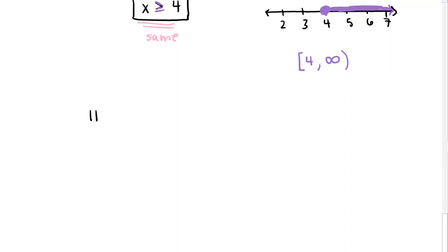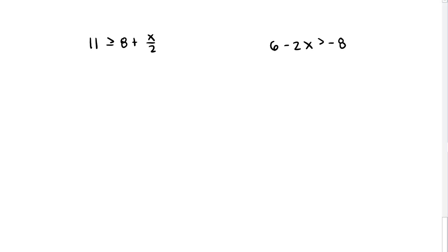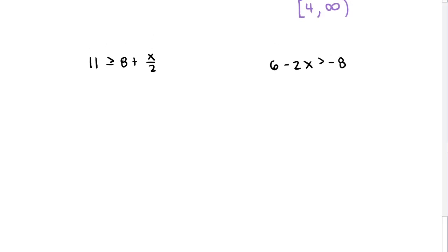Now we have two more examples: 11 is greater than or equal to 8 plus x over 2, and 6 minus 2x is greater than negative 8. Go ahead and pause the video, try these out yourself, write the interval notation, and then we'll go through them together. For the first example, let's multiply both sides by 2 to clear the fraction — this is one way to clear fractions when working with an equation or inequality.